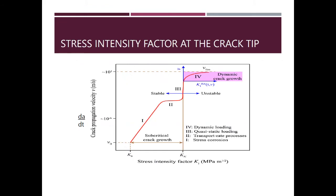Failure occurs when K is equal to K1c. Here you can see a plot between dA/dT — that is crack propagation velocity — and stress intensity factor K. Stage 1 and stage 2 are the subcritical crack growth regions, and when K becomes K1c, unstable crack propagation starts.